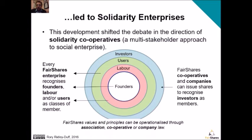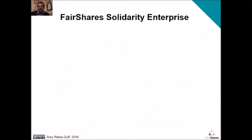Fair Shares values and principles can be operationalised through associations, cooperatives and companies. If you use the association model, all you do is create memberships. If you use the cooperative and company model, you can also issue shares. Now, let's consider the order in which things happen in a Fair Shares solidarity enterprise, because an enterprise is built over many years and all you need to ensure is that your constitution will provide for the future. You don't have to configure everything from the outset.